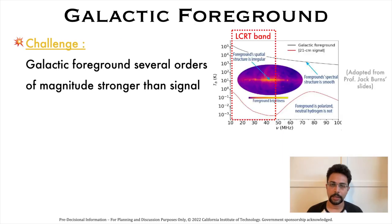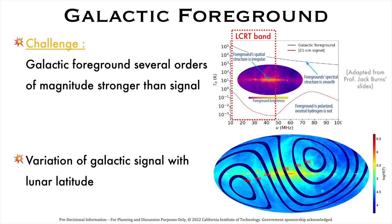The biggest challenge in collecting this data is the galactic foreground radiation signal by our own Milky Way galaxy. This foreground is five orders of magnitude stronger than the dark ages signal at the LCRT band. The figure on the bottom shows the galactic foreground signal in the galactic reference frame.